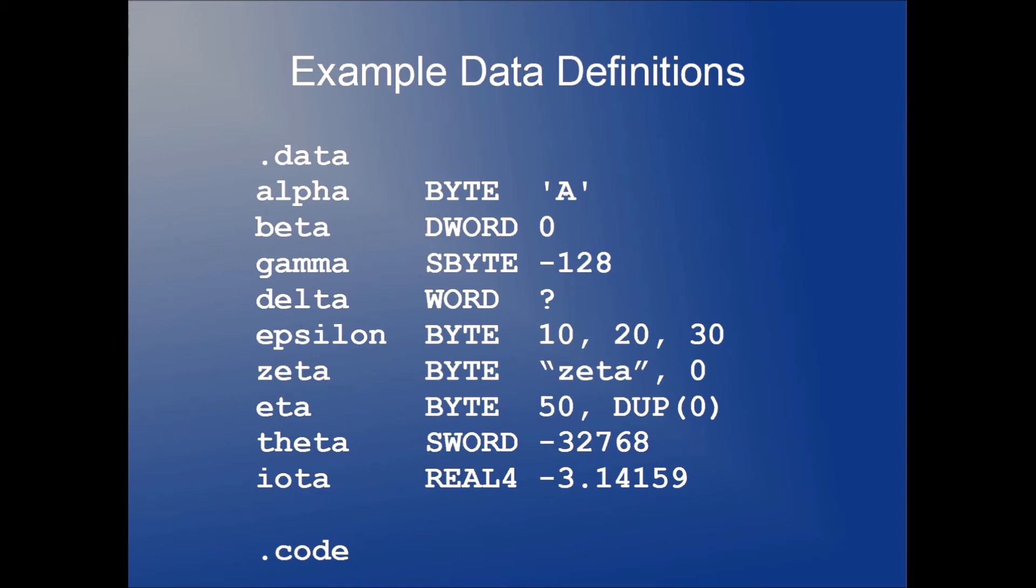Epsilon, type byte. Now here we have an example of three initializers in the series that are separated by commas. Essentially, epsilon in this case is what an array looks like in assembly. So we've got a three-byte array that contains the values 10, 20, and 30.